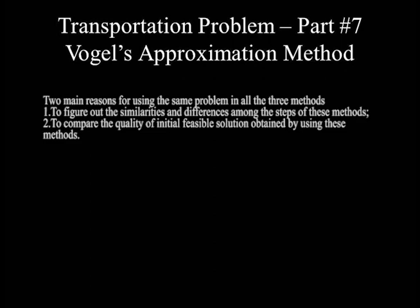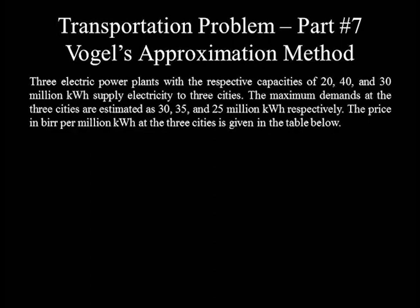Here is the problem. Three electric power plants with respective capacities of 20, 40, and 30 million kWh supply electricity to three cities. The maximum demands of the three cities are estimated as 30, 35, and 25 million kWh respectively. The price per million kWh at the three cities is given in the table below.